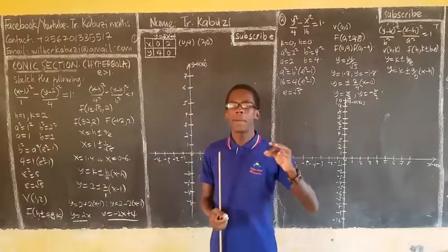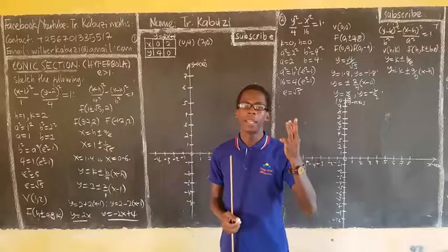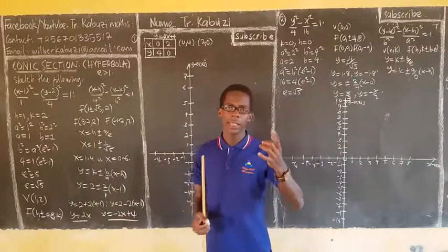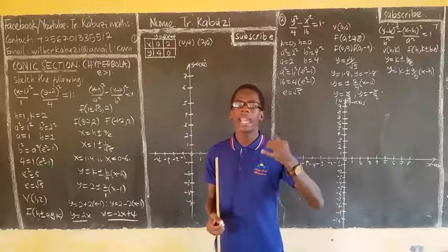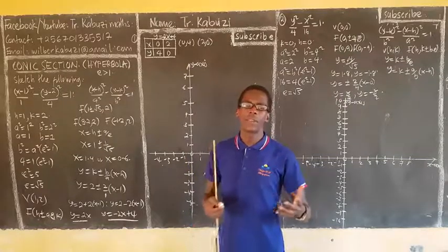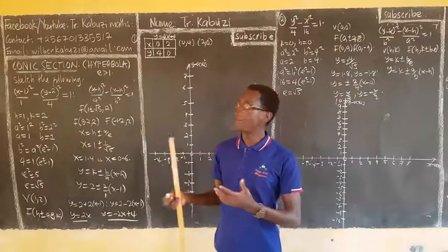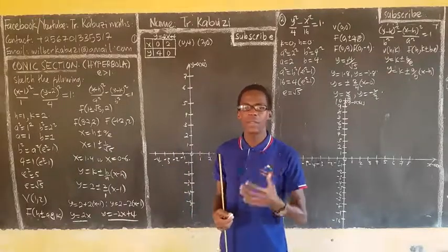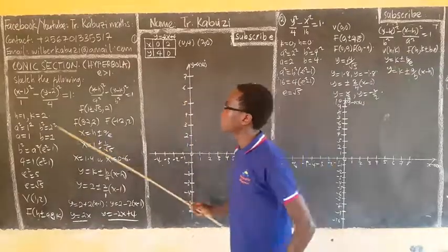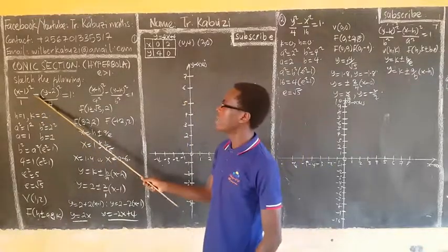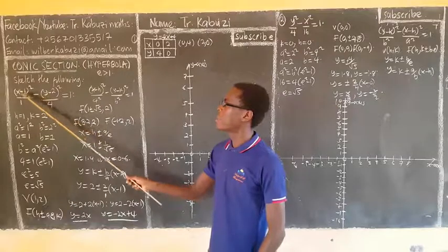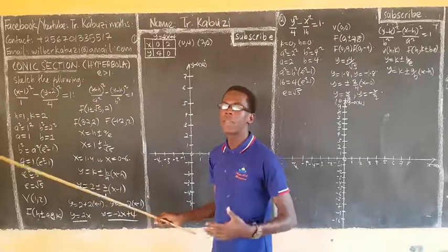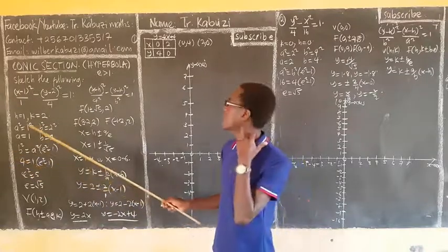To sketch a hyperbola, you need basically four things: you need the vertex, you need the two foci, you need the relationships, and you also need the asymptotes. Now I'll reduce the size of the video so you can see the working, then I'm just going to explain as you follow. You see this one is really negative on y, meaning it's on the horizontal axis, hence it's going to be a transverse axis.